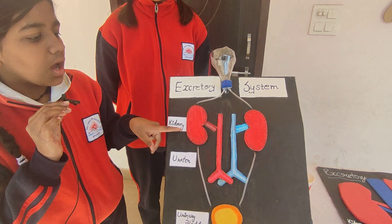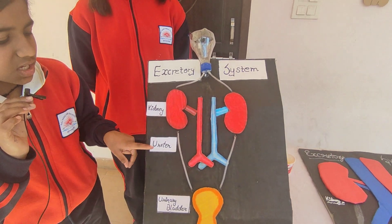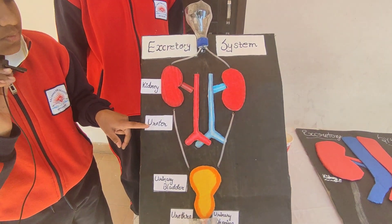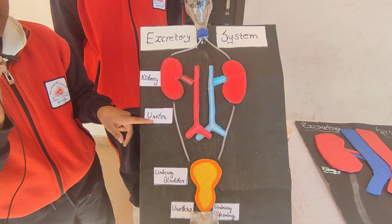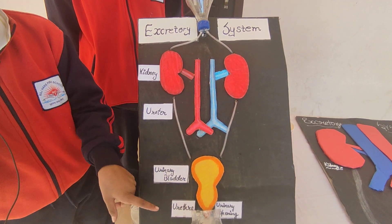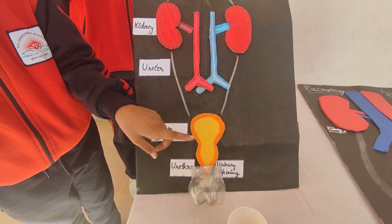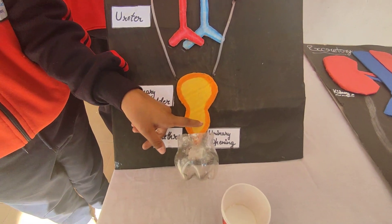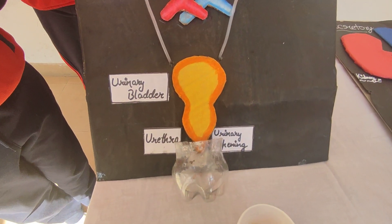Number one is kidney. Second is ureter. Third is urinary bladder. Fourth is urethra. And then, urinary opening.